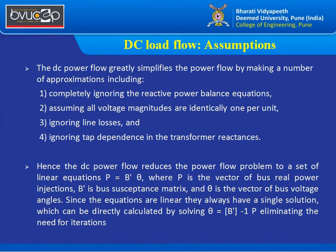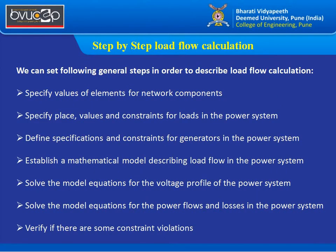With these DC load flow assumptions, we obtain linear equations representable as P = B'θ, where P is the vector of bus real power injections, B' is the bus susceptance matrix (the imaginary part of the bus admittance matrix), and θ is the vector of bus voltage angles. Since this is a linear equation, we can directly calculate θ = B'⁻¹P in one iteration, eliminating the need for iterative methods.